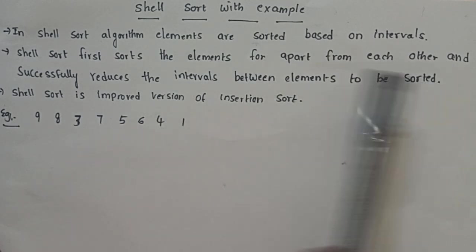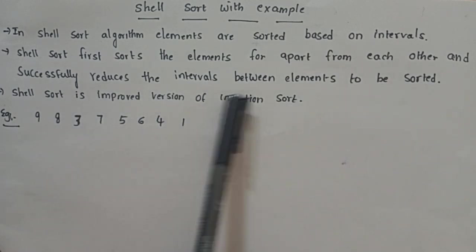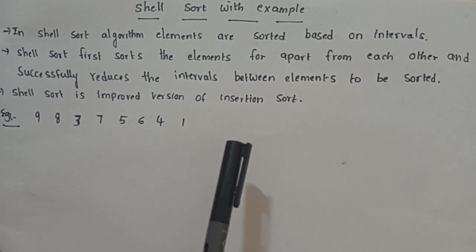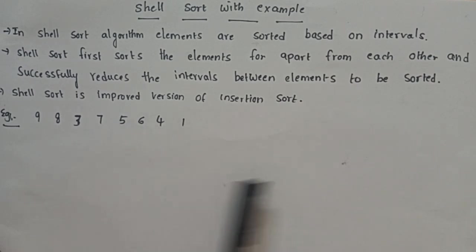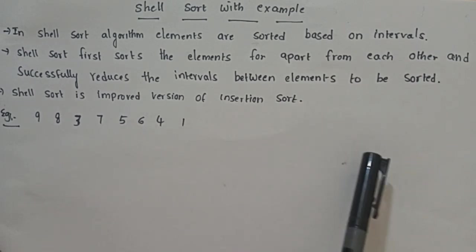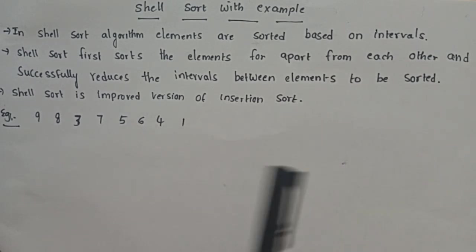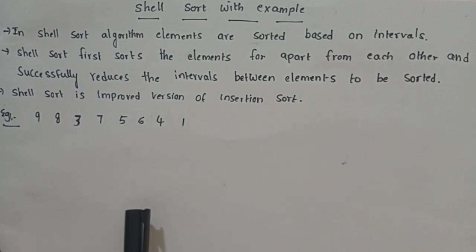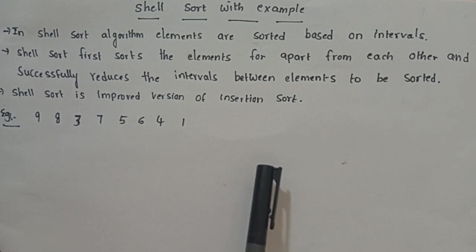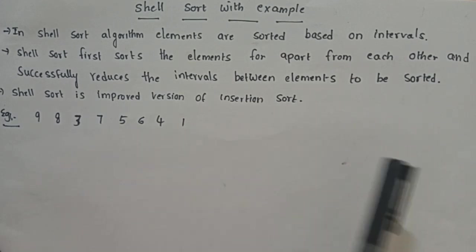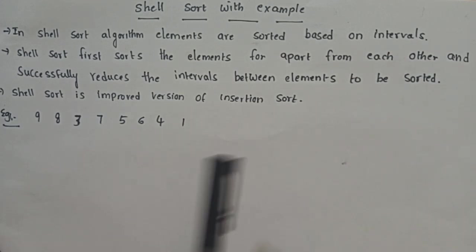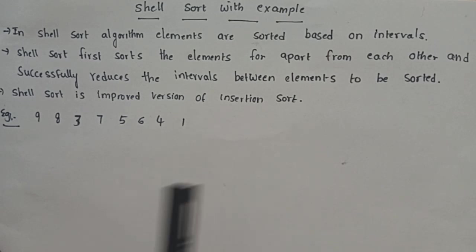Shell sort first sorts elements that are far apart from each other, then successively reduces the interval between elements to be sorted. First with interval 4, comparing elements 4 gaps apart; then interval 2, comparing elements 2 gaps apart; then interval 1.